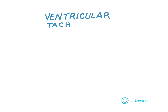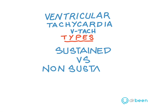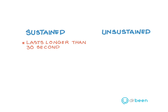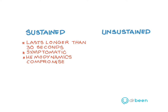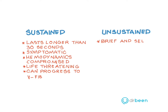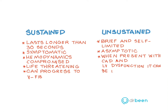We'll discuss the different types of VTAC, which are sustained and non-sustained. Sustained ventricular tachycardia lasts longer than 30 seconds and is almost always symptomatic. It's associated with hemodynamic compromise, such as hypotension or MI. It's life-threatening and it can progress to V-fib. Unsustained VTAC is brief and self-limited, and usually asymptomatic. However, when present with coronary artery disease and left ventricular dysfunction, it's an independent risk factor for sudden death. It's important to check patients who have non-sustained ventricular tachycardia for underlying heart disease.